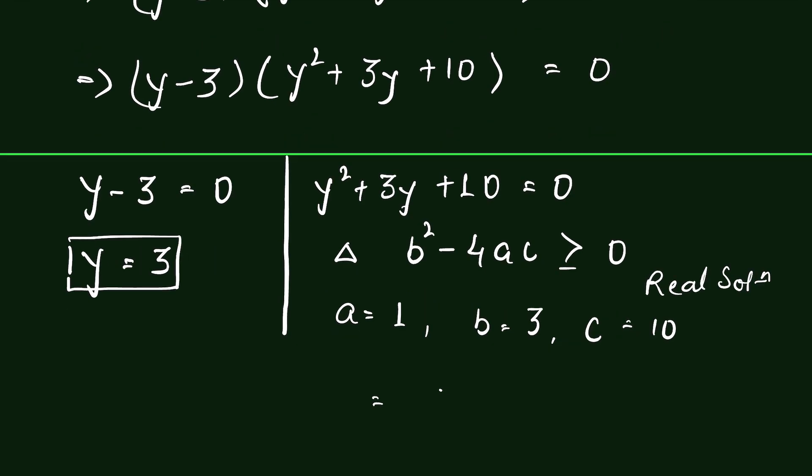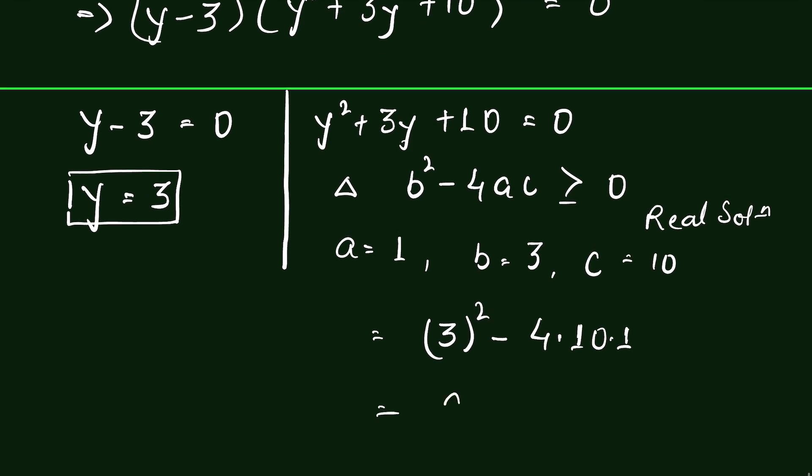Therefore, b square minus 4ac is 3 square minus 4 times 10 times 1, so it is 9 minus 40 which is less than 0.